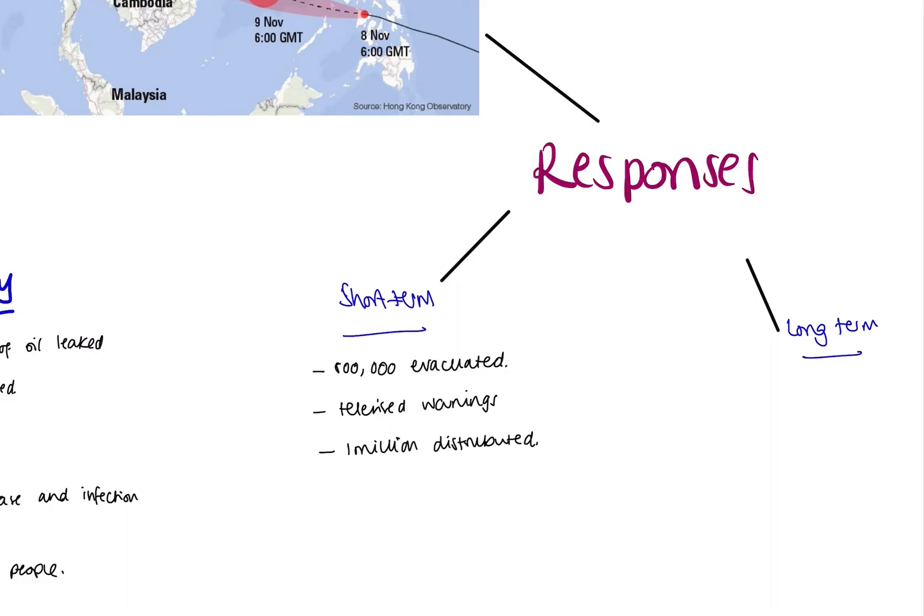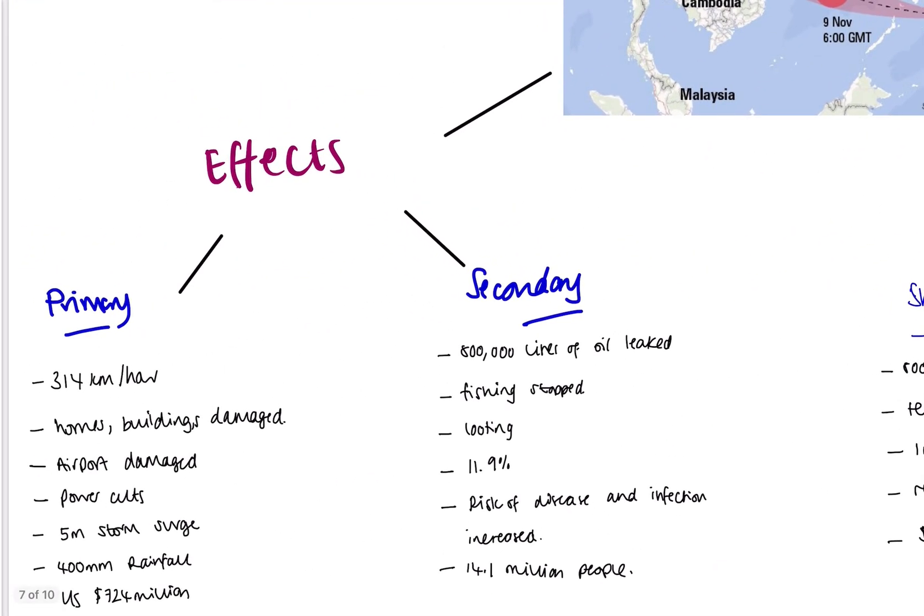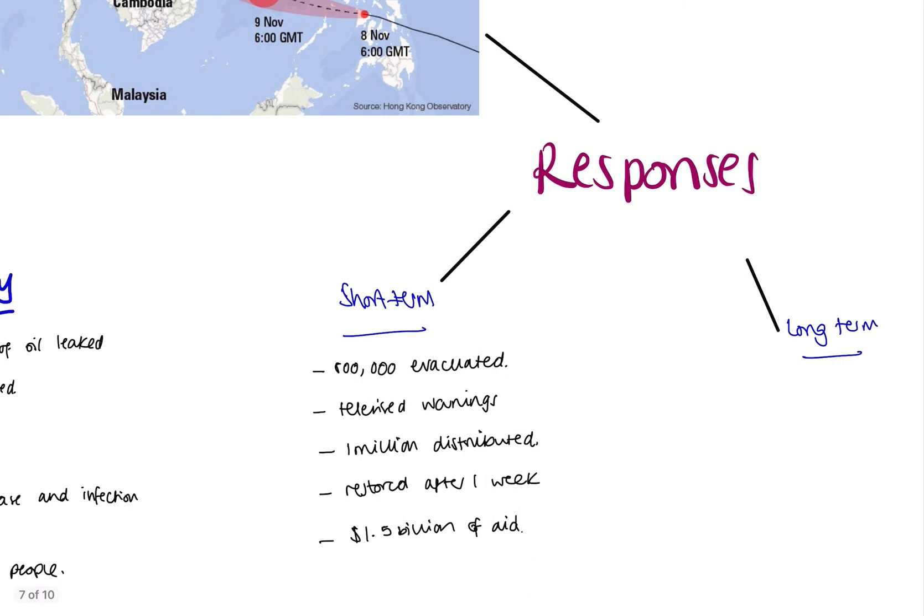If you've got 14.1 million people that have been affected by this, does 1 million food packs really touch the surface? Probably not. Thinking back to those power cuts we said they had, the power was restored after one week. So the energy did come back to the area, and the aid was offered. But again, not as much as you might have hoped for. They got 1.5 billion dollars, that's US dollars, of aid. And how much did we say the damage was? That's it, 724 million dollars. So some people might say it's obviously more than that, but think about the cost of things like food. Is that enough to rebuild infrastructure to the same standard? I'd probably argue not.